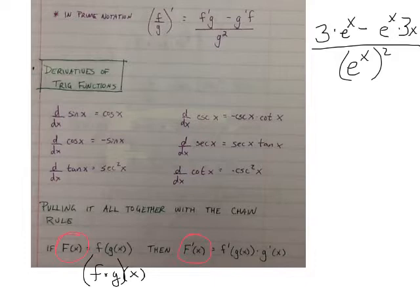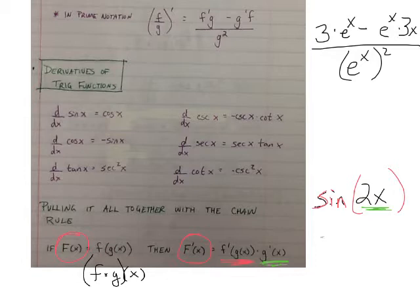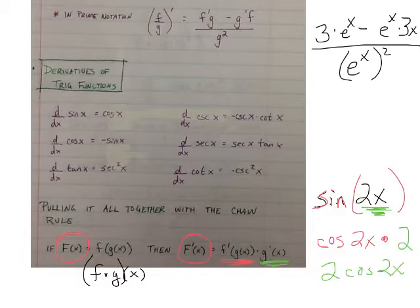It is the derivative of the outside times the derivative of the inside. So if I had the equation sine of 2x, the outside is the sine function, and the inside is the 2x. So the derivative of the outside would be cosine 2x, and then we multiply that by the derivative of the inside, which is just 2. So our final derivative is 2 cosine 2x. And I've got some more examples on the next page.